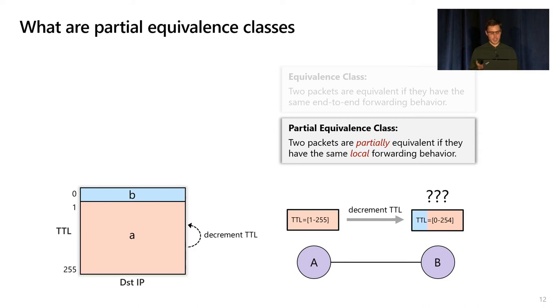That straddles the space between the two partial equivalence classes, but that's okay. We're just going to allow that to happen, and we're going to deal with it when we're doing the property checking.